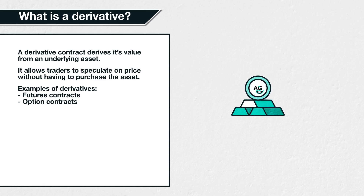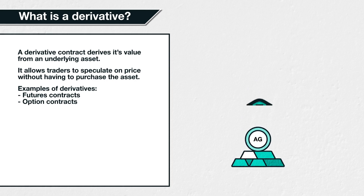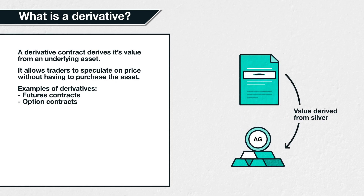In our previous example you purchased some silver directly, and in doing so you would benefit from any subsequent increase in the price of silver. It is possible to get this same exposure to the price of silver without purchasing the silver itself, by utilising a derivative contract that derives its value from silver — silver here being the underlying asset.